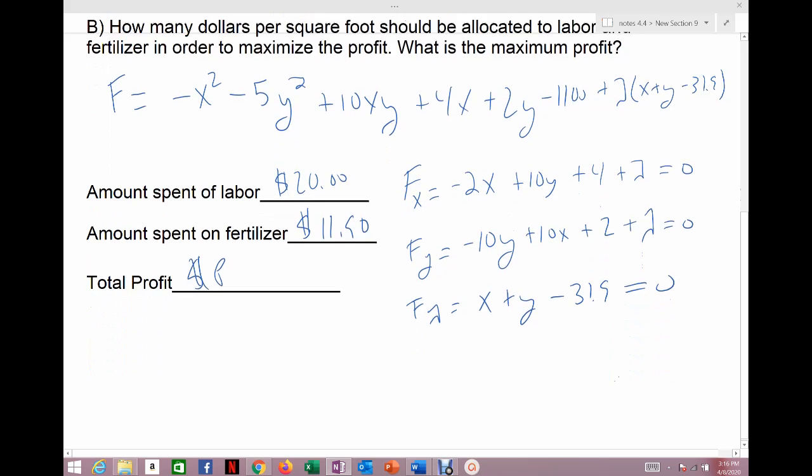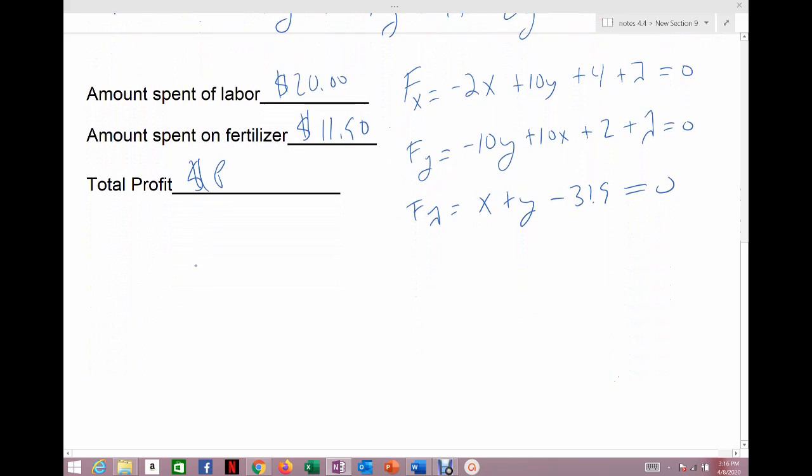And so when I go plug it into the matrix, my matrix equation should have been negative 2x plus 10y plus lambda equals negative 4, positive 10x, minus 10y plus lambda equals 0, x plus y equals 31.9. When you type that in, again, I was missing the 10s.